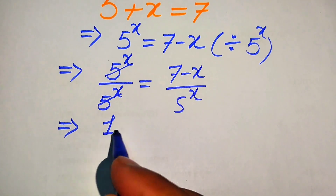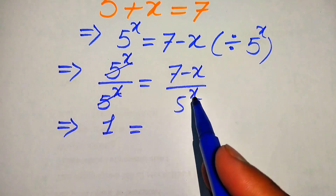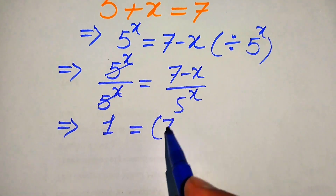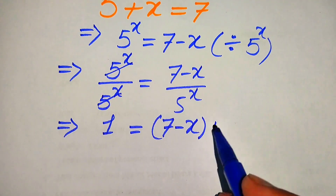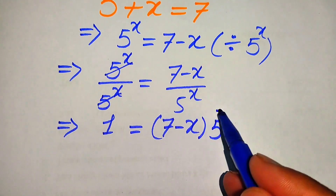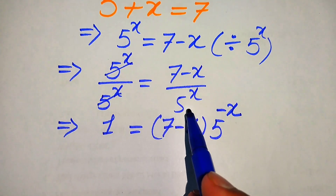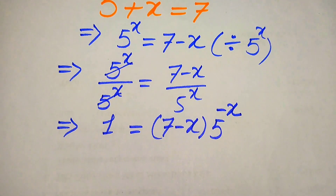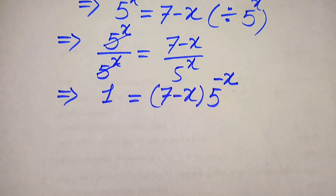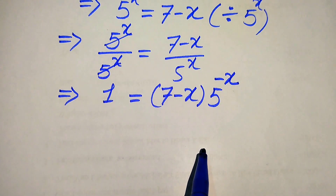On the left hand side we get 1. We move the 5 to the power of x to the numerator on the right side, and it will be written as 7 minus x times 5 to the power of minus x, because when we move the term with a positive exponent to the numerator it becomes negative. Now further in the next step we need more simplifications.